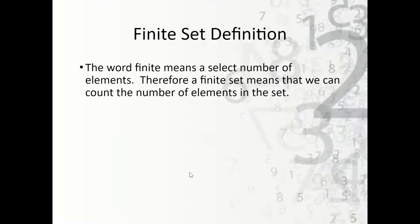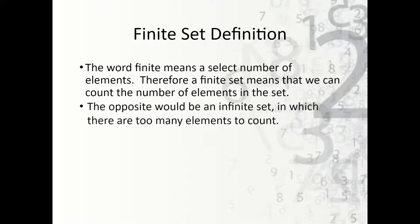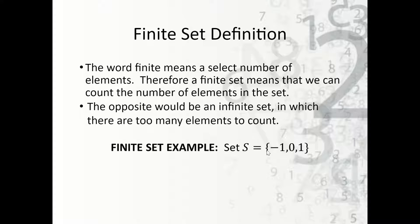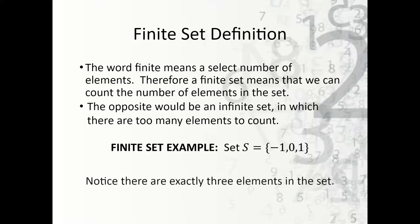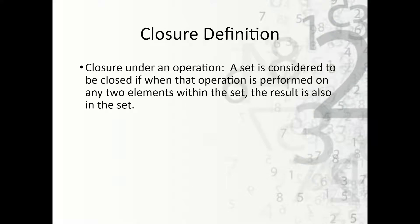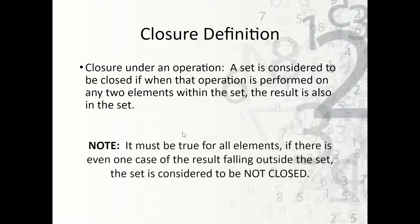What does finite mean? Finite means a select number of elements — a finite set means we can count the number of elements. The opposite is an infinite set, which has too many elements to count. For example, S equals the set of {−1, 0, 1}. We can count exactly 3 elements, so that's a finite set. Now, closure definition: a set is considered closed under an operation if, when that operation is performed on any two elements within the set, the result is also in the set. This must be true for all elements — if even one result falls outside the set, it is not closed.